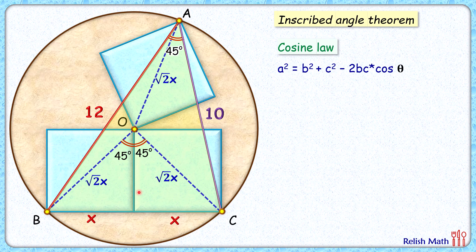Putting the values here: a, that is 2x, b is 10 and c is 12, and theta is the angle between side lengths 10 and 12, that is 45 degrees.